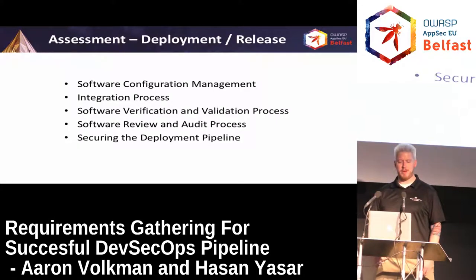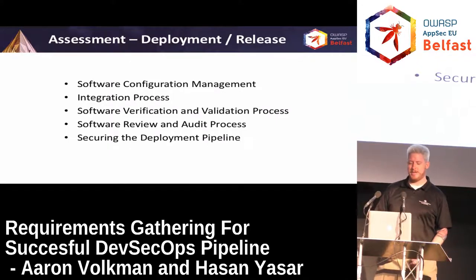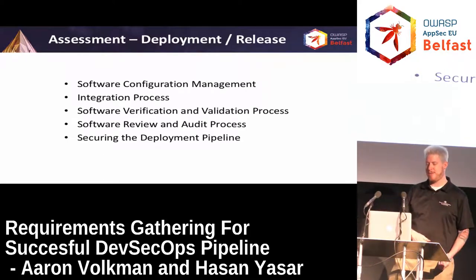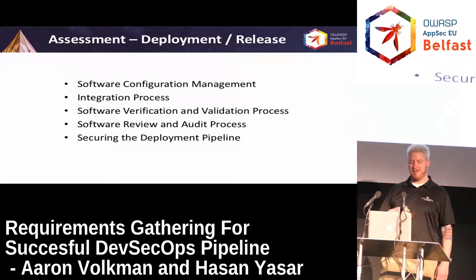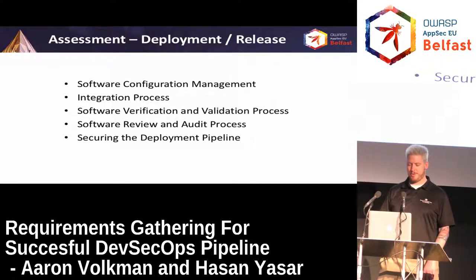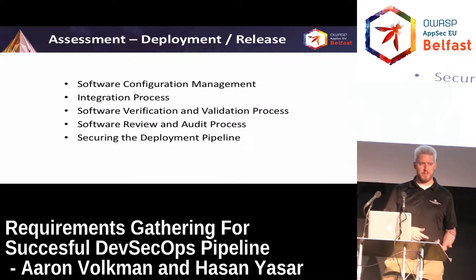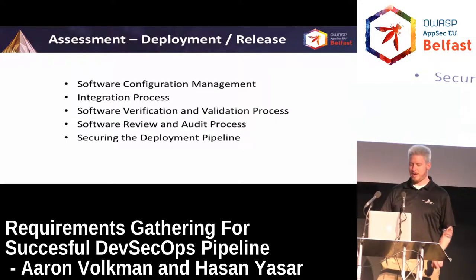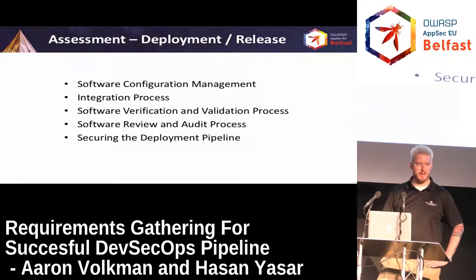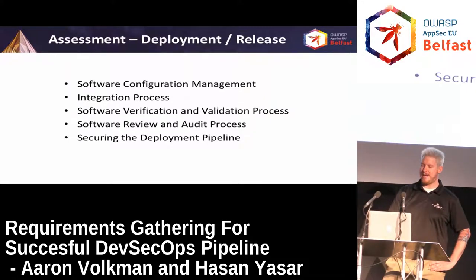Next thing we assess is the deployment and release process. We understand how their software configuration management works, how their integration process works — whether they do it on a build server, hire somebody else to do it, or do it on the lead developer's laptop, copy it to a thumb drive, and pray it works. We want to look at their software verification and validation process, the software review and audit process, and how they secure their deployment pipeline. Having a secure deployment pipeline is crucial to having an auditable trail — knowing exactly what source code contributed to an executable in production — and it also mitigates insider threats. Securing the deployment pipeline is very important, ensuring they have appropriate access controls.